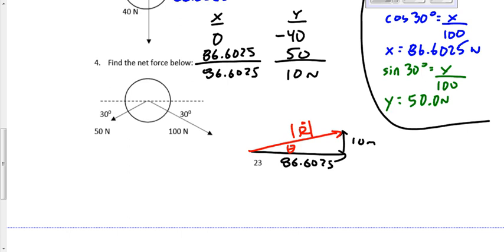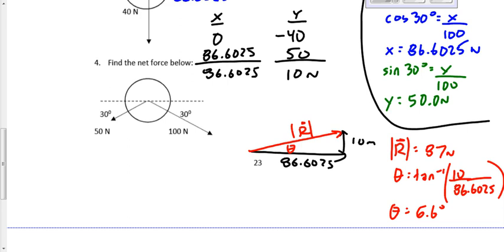The angle goes at the start of the vector diagram, just like it did in the last unit. R equals the square root of 86 squared plus 10 squared. That gives me a value of 87 newtons. And theta is the inverse tan of opposite over adjacent. 10 over 86.6025 gives me a value for theta of 6.6 degrees. And we're going to make that 6.6 degrees north of east. Why north of east? Because we're measuring that angle from the east axis, but yet it's north from the east axis. So north from east or north of east.